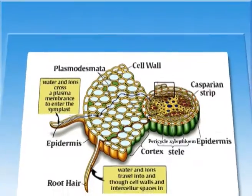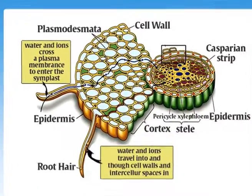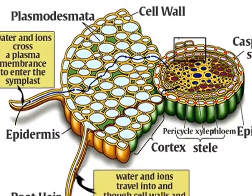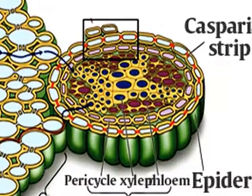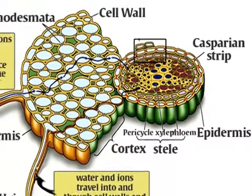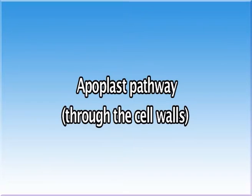Before knowing the mechanism of ascent of sap, it is imperative to know the path of water across the plant parts. Water moves centripetally across the root cortex to the stele in response to a potential gradient. The initial movement is across the epidermal layer of the root with its associated root hairs and then through the cortex. There are three possible pathways of water transport across the root from epidermis to cortex: the apoplast pathway, through the cell walls.